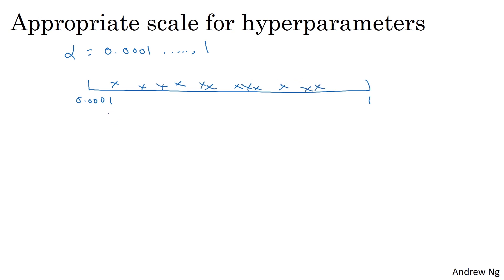You're using 90% of the resources to search between 0.1 and 1, and only 10% of the resources searching between 0.0001 and 0.1. So that doesn't seem right. Instead, it seems more reasonable to search for hyperparameters on the log scale, where instead of using a linear scale, you'd have 0.0001 here, and then 0.001, 0.01, 0.1, and then 1. And you instead sample uniformly at random on this type of logarithmic scale.